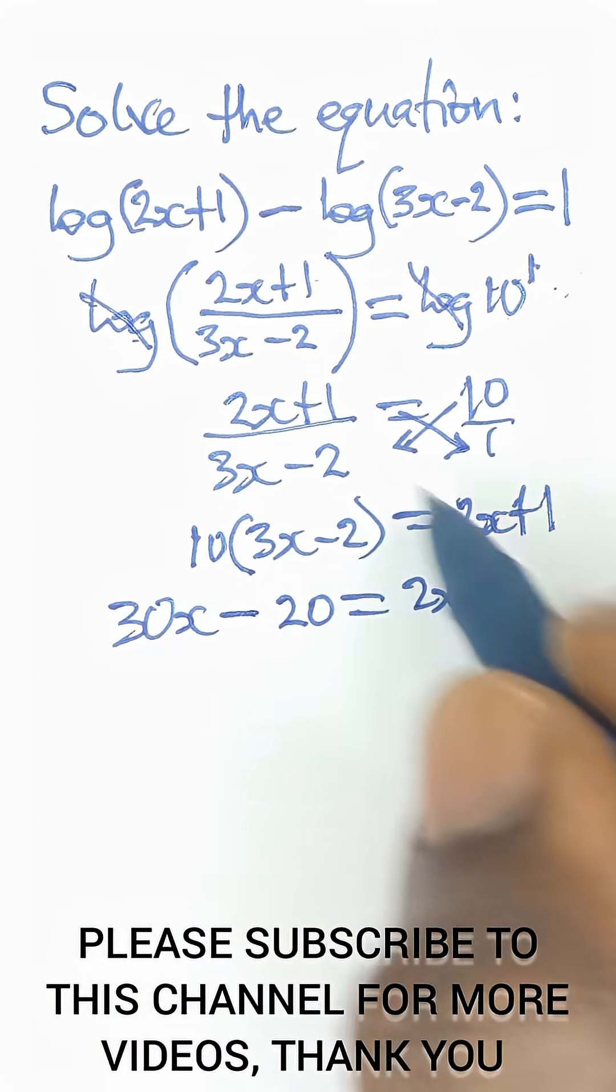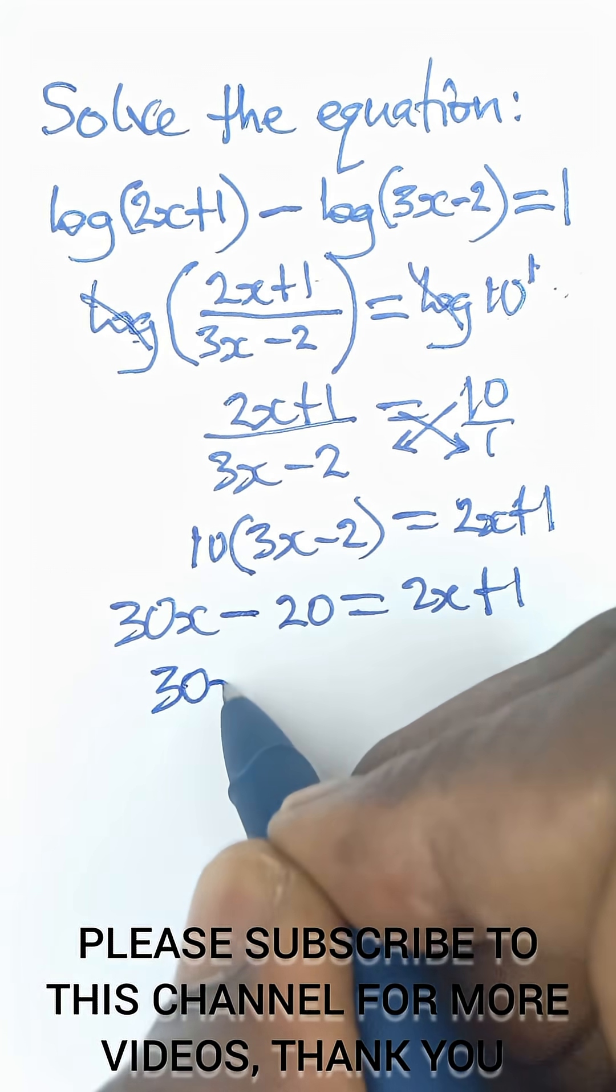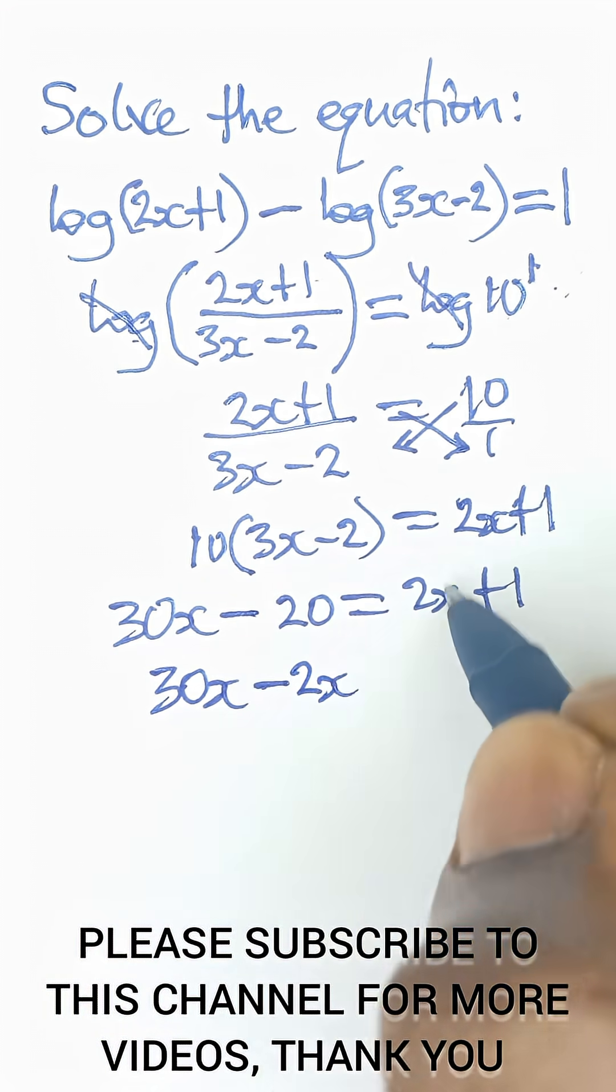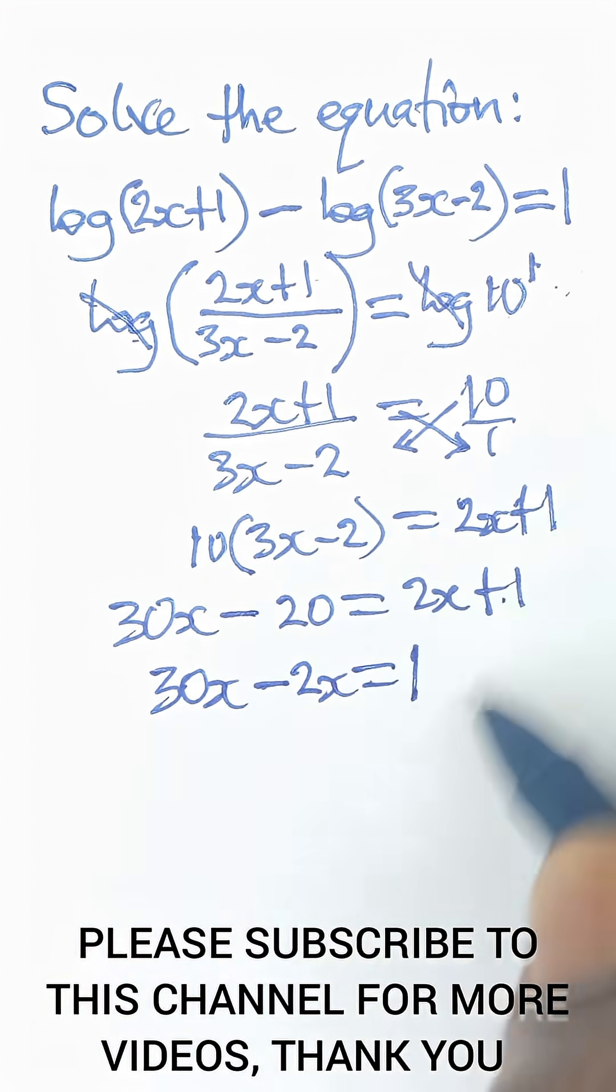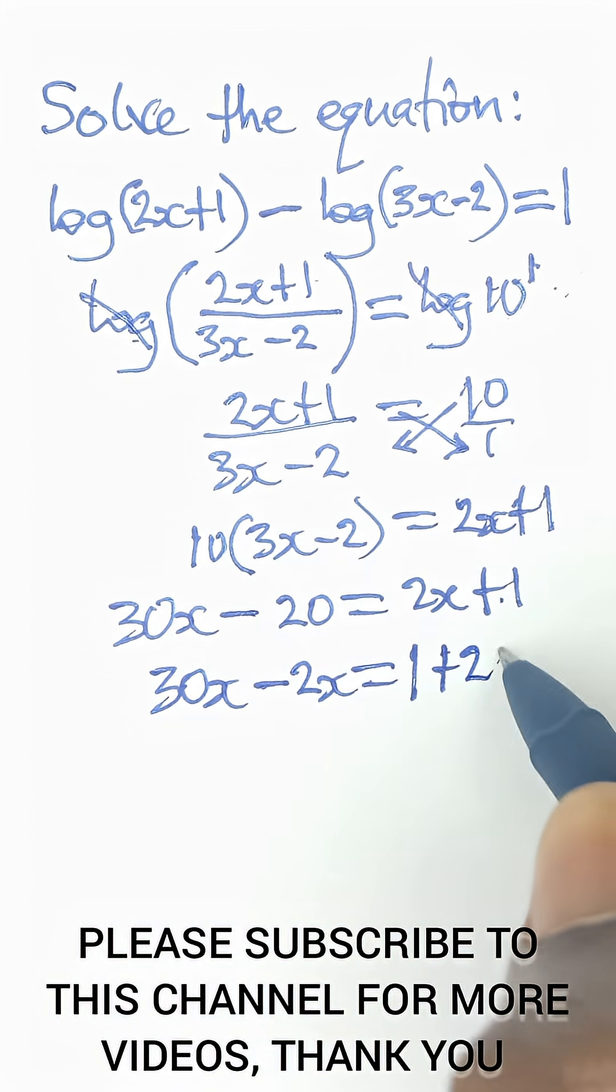So let this positive 2x come to this side. It becomes 30x minus 2x when this comes to this side, and it's equal to 1 on this side. Negative 20 goes to that side, it becomes positive 20.